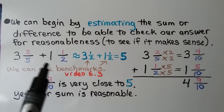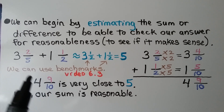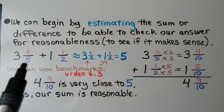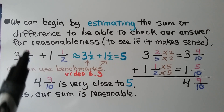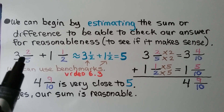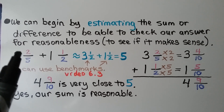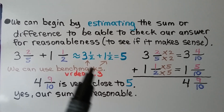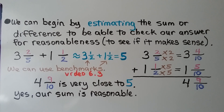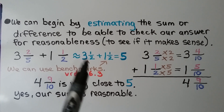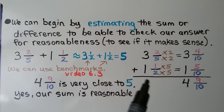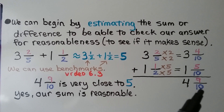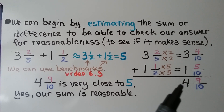We have 3 and 2 fifths plus 1 and 1 half. Using benchmarks from video 6.3, 2 is almost half of 5, so we can call this mixed number 3 and a half. We have 1 and a half. So 3 and a half plus 1 and a half equals 5, meaning our sum should be close to 5. We got 4 and 9 tenths, and 9 tenths is very close to 1 whole, so plus the 4 whole that's close to 5. Our sum is reasonable.